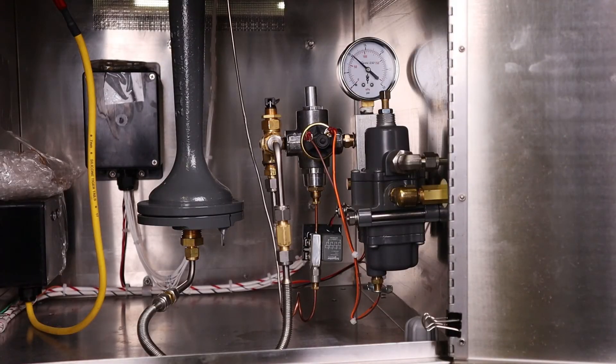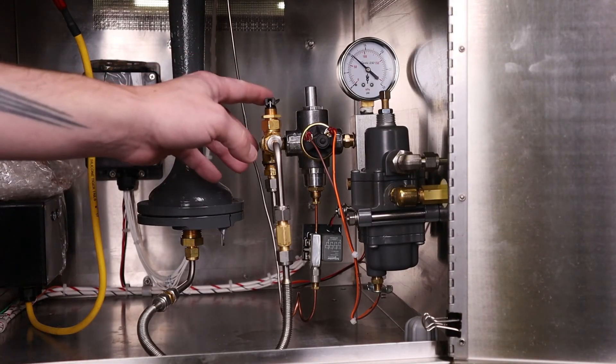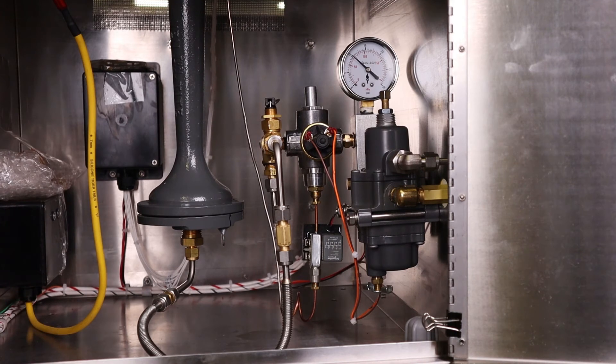Next, we'll check that the burner run valve is in the closed position. We can open the external fuel line to allow fuel into the system.